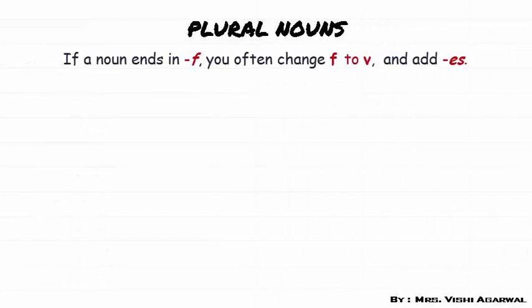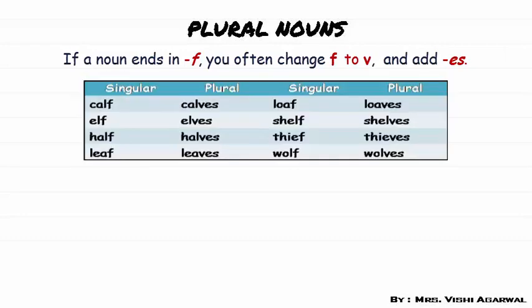Now if a noun ends in F, we often change F to V and add ES. For example: calf becomes calves, elf becomes elves, half becomes halves, leaf becomes leaves, loaf becomes loaves, shelf becomes shelves, thief becomes thieves, wolf becomes wolves. In all these words you can see that the singular nouns end with F, and to make them plural we change F into V and then add ES.